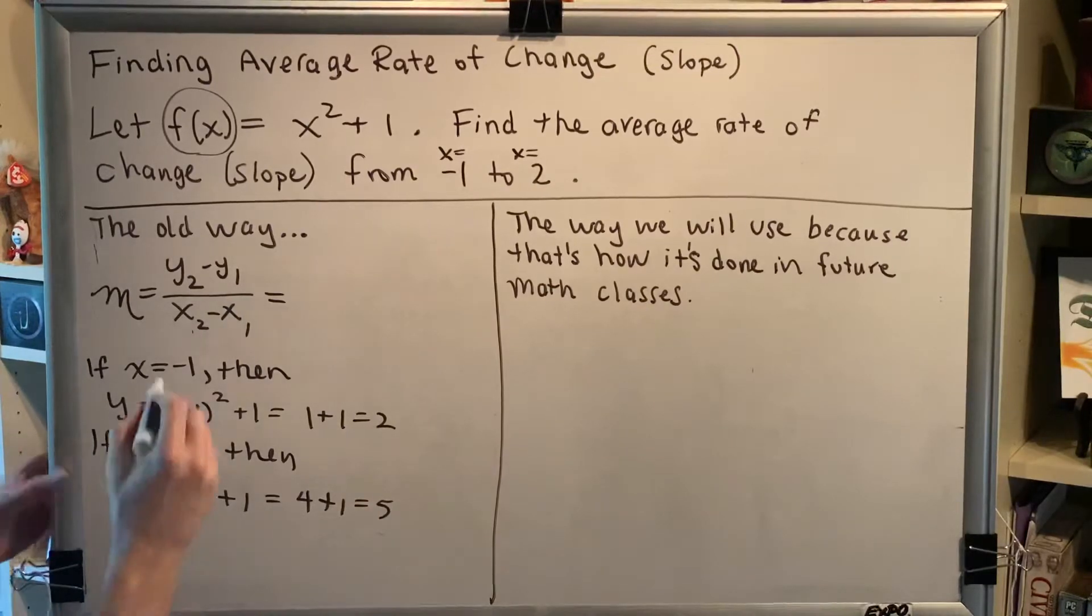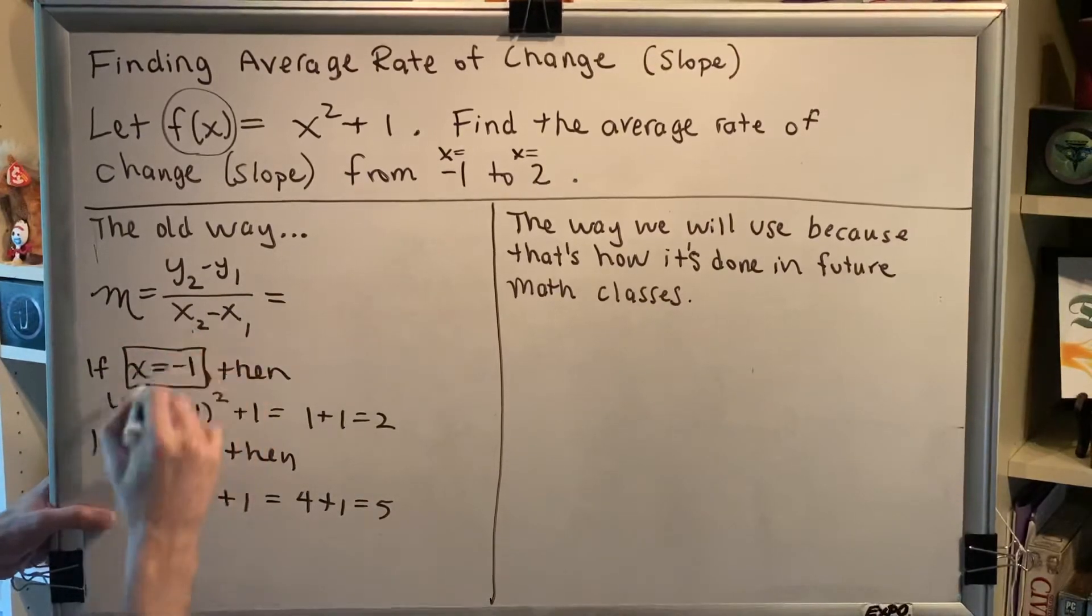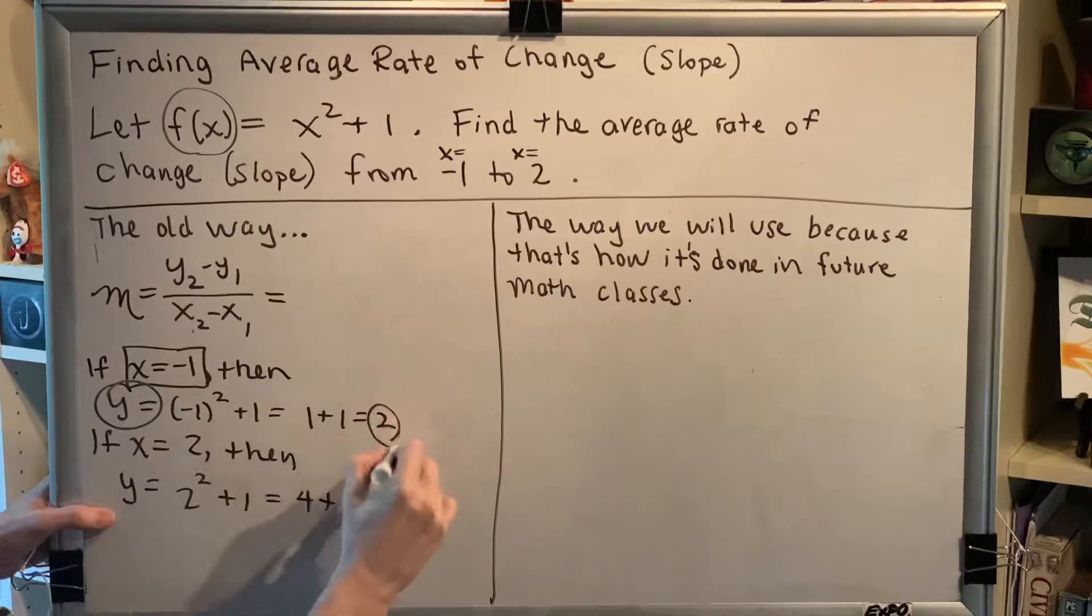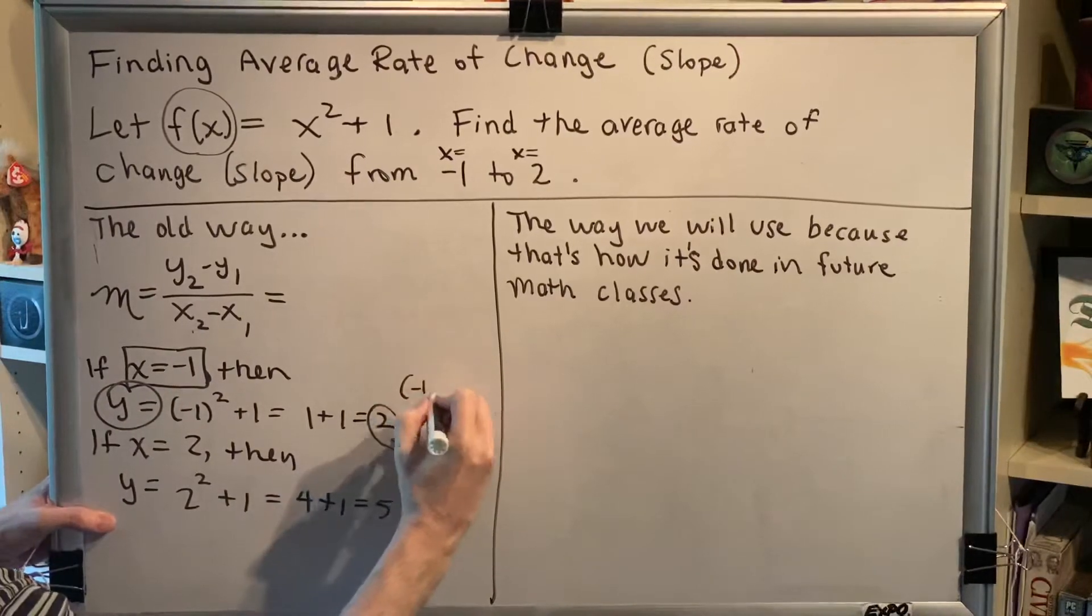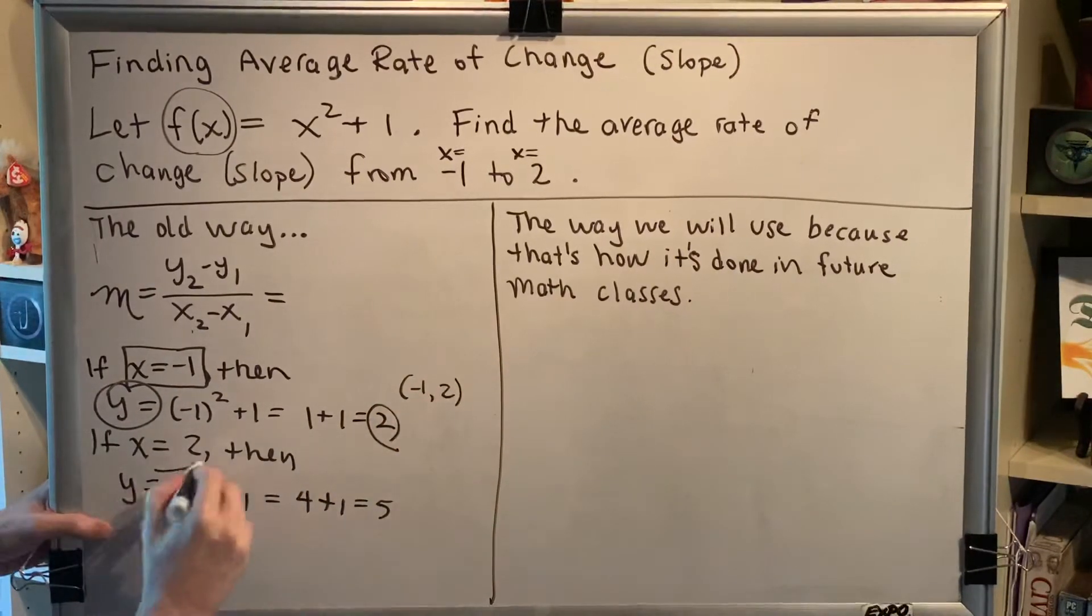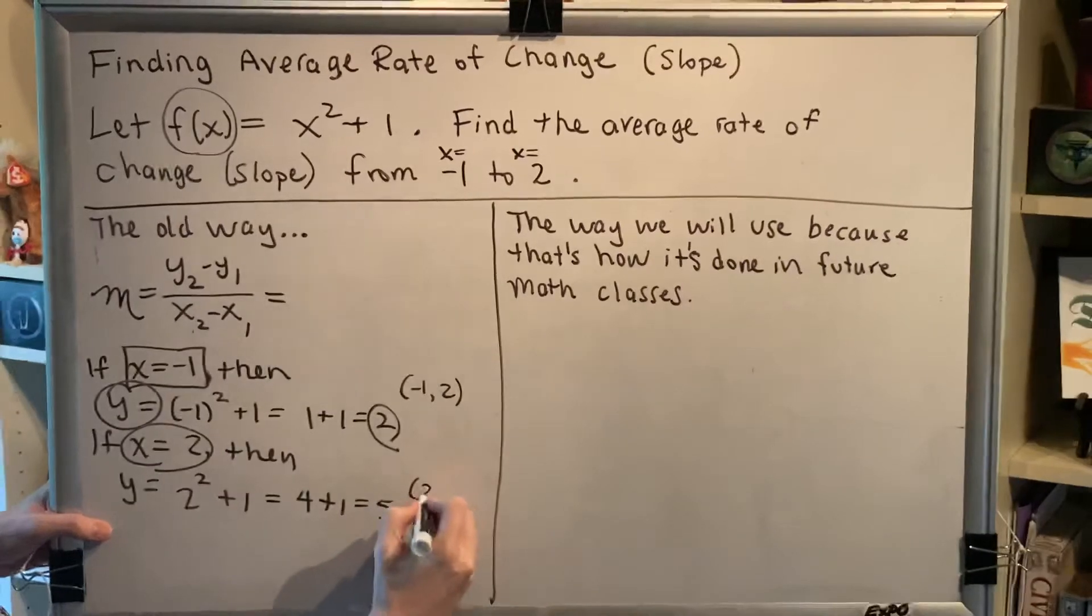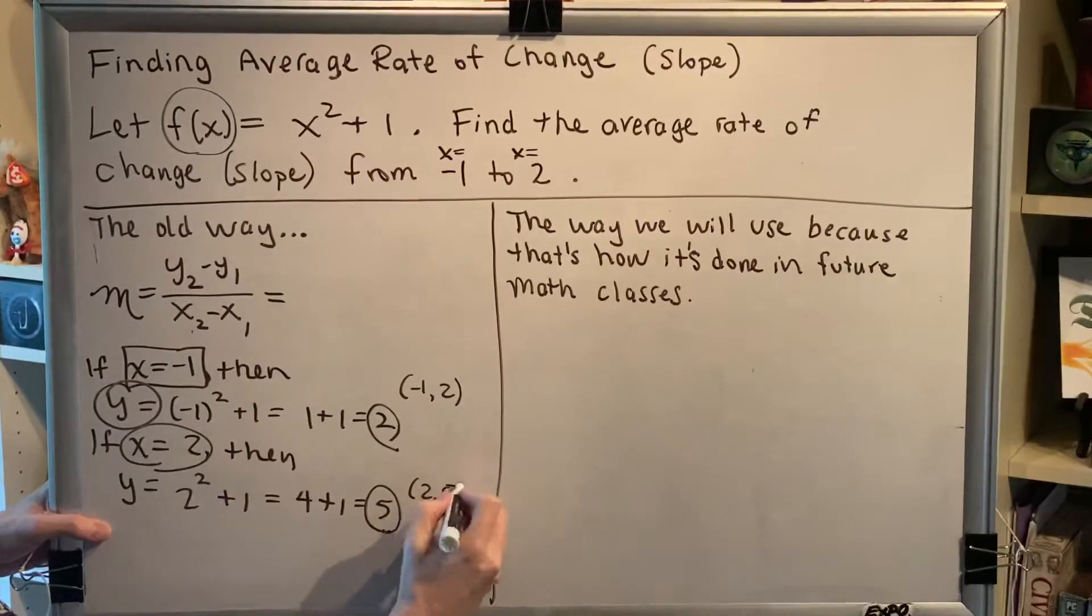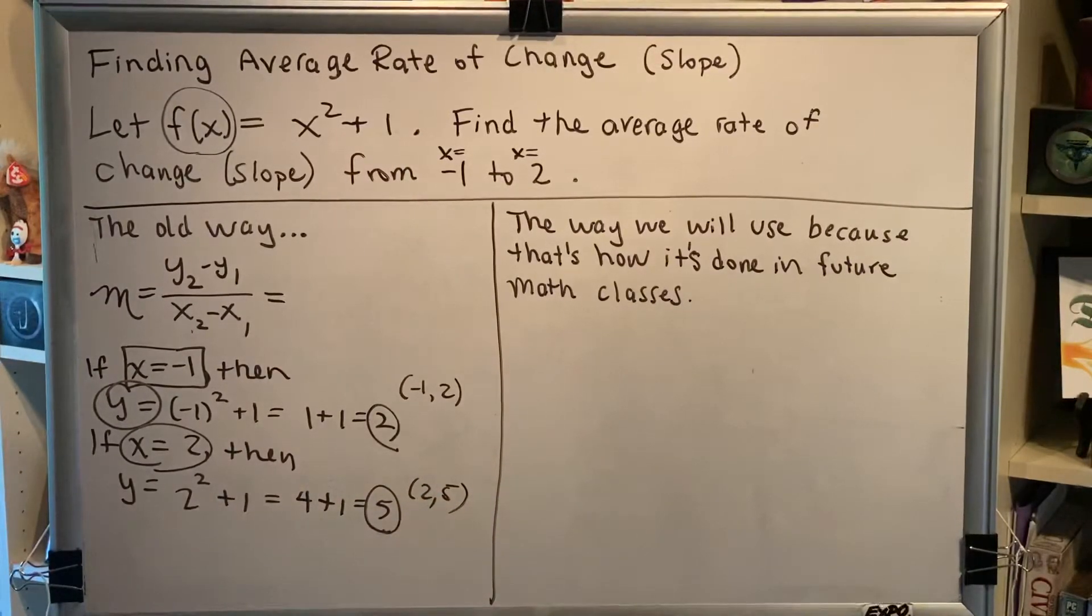So we now have our ordered pairs. This is the x and this is the y. So we get negative 1, comma 2. And when x is 2, y is 5. So we get 2, comma 5. Once we have our points we can plug them into our slope formula.